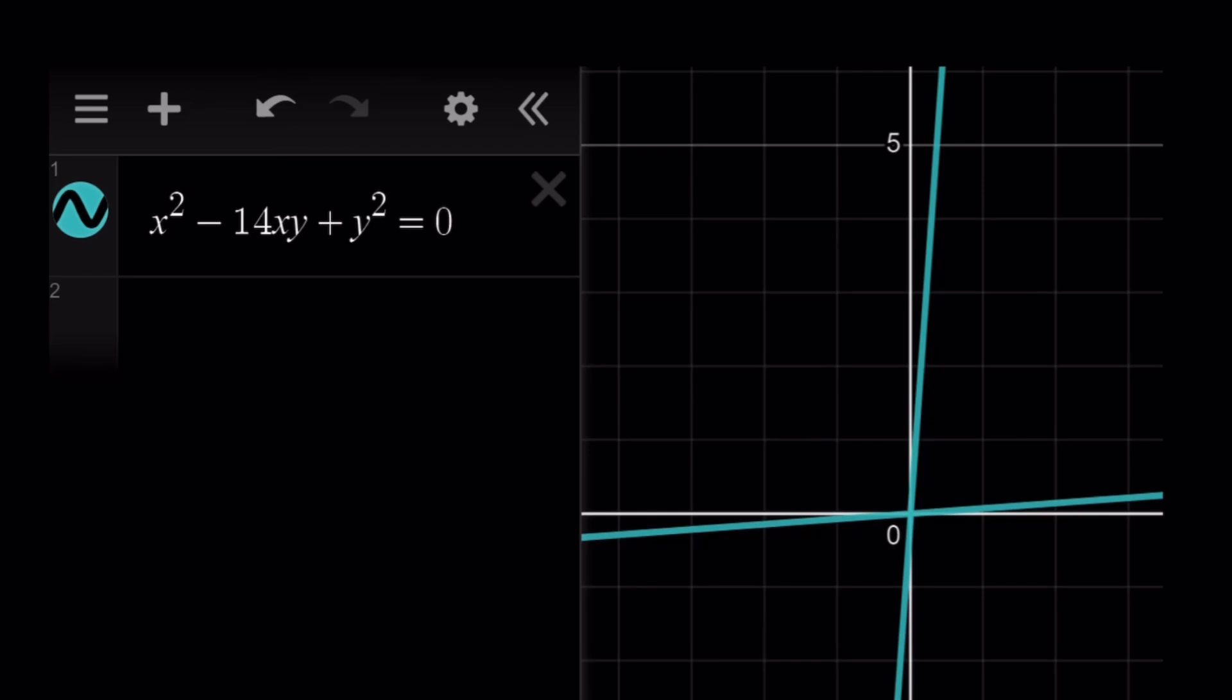So we have a pair of two lines. And x over y basically represents the slope. And this brings us to the end of the video. Thank you for watching. I hope you enjoyed it. Please let me know.